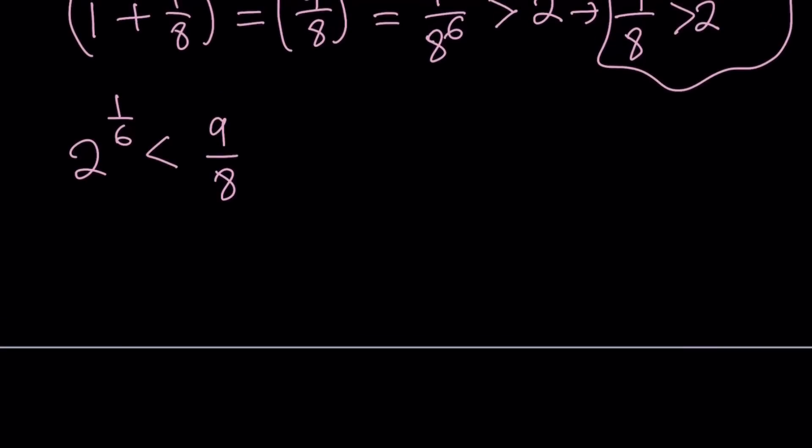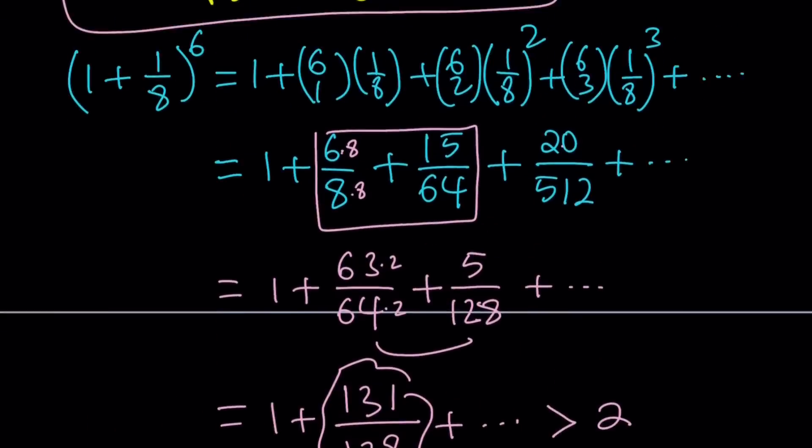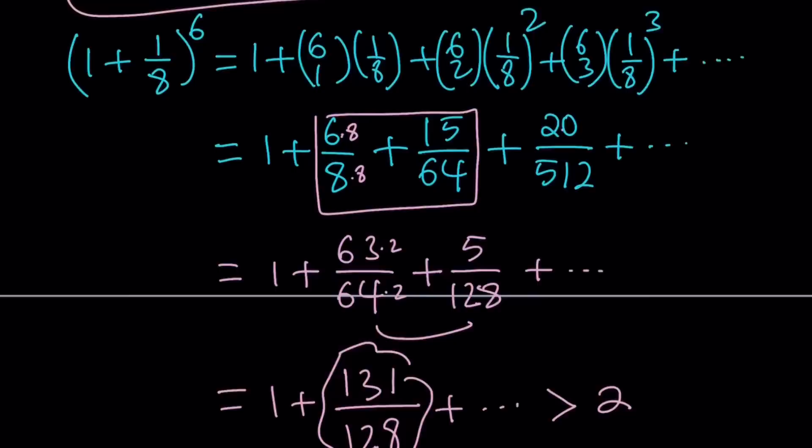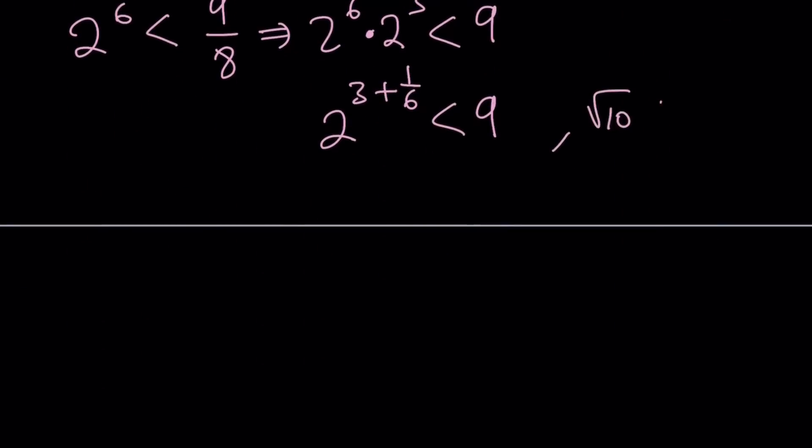Okay. So 2 to the power 1 over 6 is less than 9 over 8. I can go ahead and multiply both sides by 8 and write the 8 as 2 to the 3rd power. So that's going to give us the following, right? And then I can go ahead and add the exponents because these two numbers have the same base. That's going to give me 2 to the power 3 plus 1 over 6 is less than 9. What do we know? We do know that square root of 10 is less than 3 plus 1 over 6. Great. Square root of 10 is less than 3 plus 1 over 6. So how could I use that information?